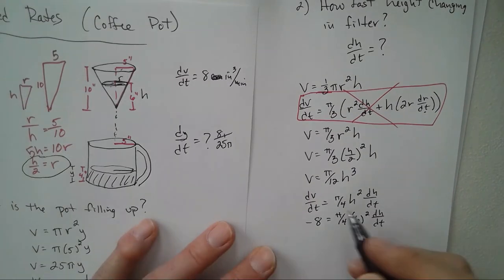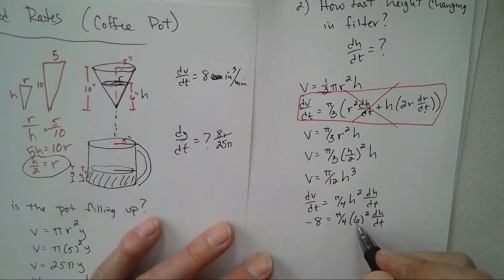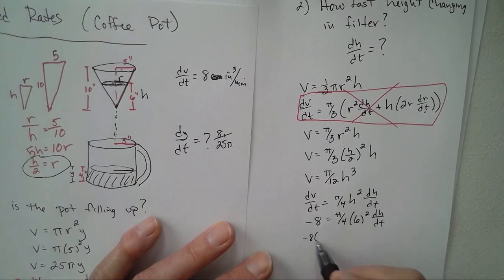So whatever, 36 times 4... 144. So what do we have? Wait, oh, it's 36 divided by 4, which is 9. So negative 8 over 9π equals dh/dt. My mental math is correct. 36 over 4.